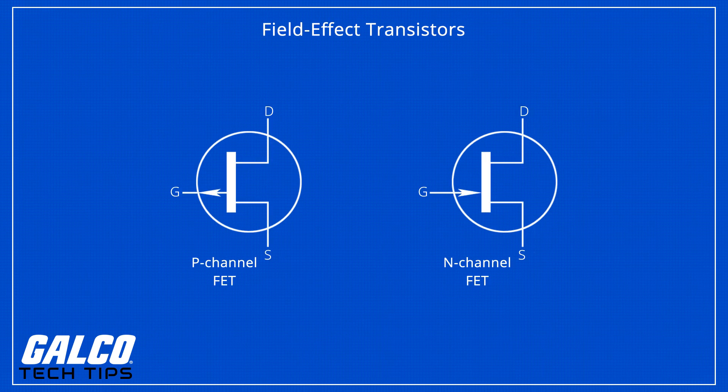In a field effect transistor, the terminals will be labeled gate, source, and drain, with voltage at the gate controlling current between the source and the drain.